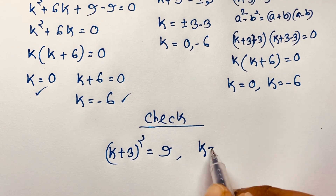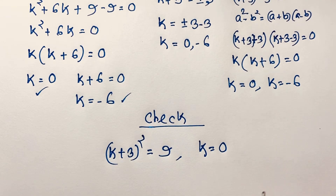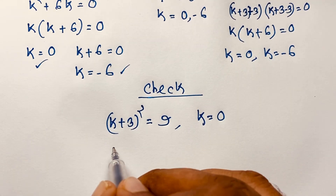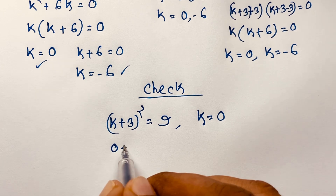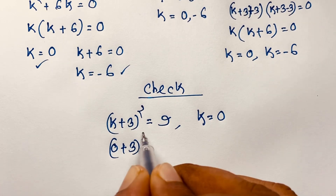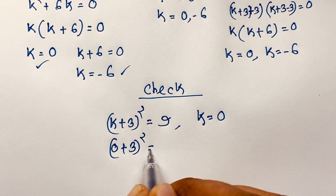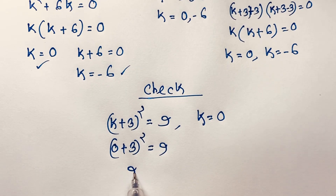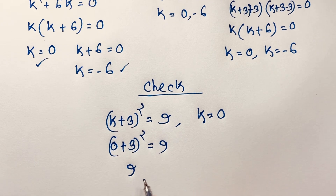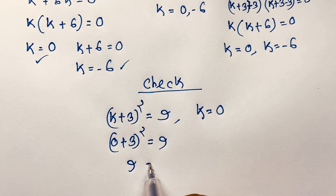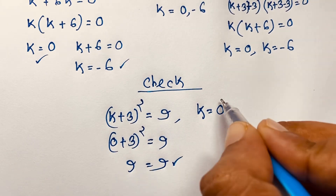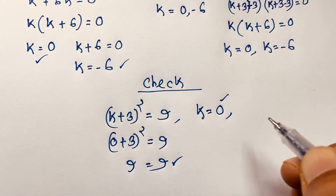Let me verify: taking k = 0, we get (0 + 3)² = 9, which is 3² = 9, so 9 = 9. Left hand side equals right hand side — this is correct.